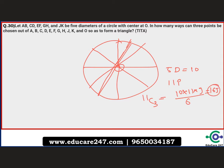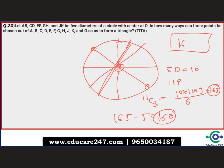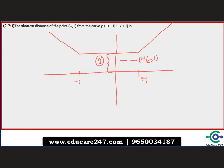You might be tempted to put 165 as the answer, but that is not correct. Any three collinear points — the two endpoints of a diameter and the center O — will not form a triangle. There are 5 such collinear sets, one for each diameter. So we subtract these 5 cases: 165 − 5 = 160. The correct answer is 160.